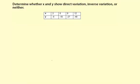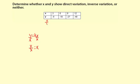Determine whether x and y show direct variation, inverse variation, or neither. Direct variation is y equals kx. And that means the variation constant k — and constant means it's always the same value — is going to be y divided by x equals k. So if we want to figure out if there's a direct variation, we can figure out y divided by x.